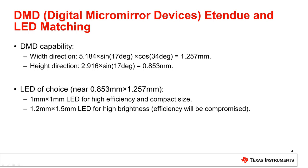Two popular LED sizes near this are chosen. A 1 mm by 1 mm LED can have high efficiency, while the 1.2 mm by 1.5 mm LED can have high brightness with compromised efficiency.